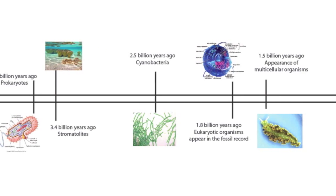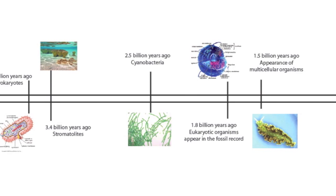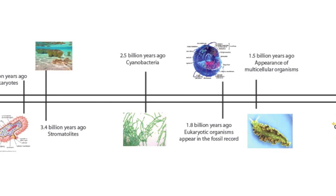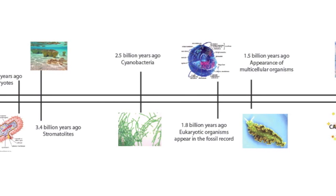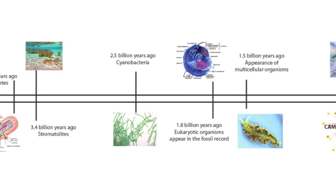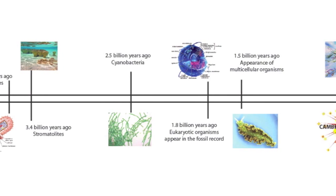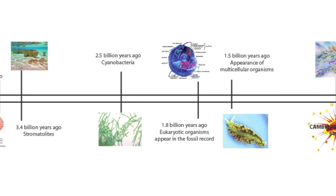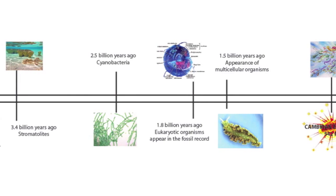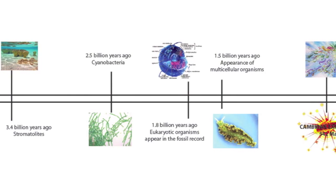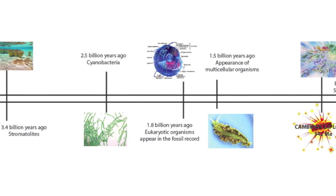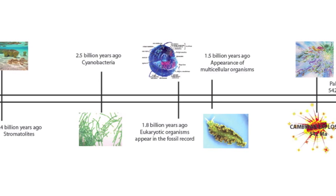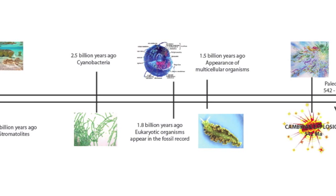Eukaryotic organisms appear in the fossil record 700 million years later, leading to the appearance of multicellular organisms 300 million years later. The Cambrian explosion occurred 542 million years ago.